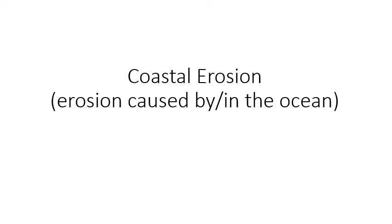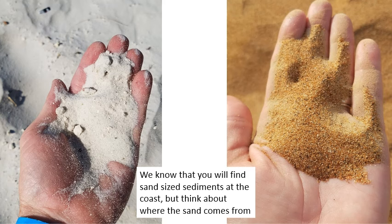Today's presentation is about coastal erosion — stuff that's getting moved around by the ocean or moving around in the ocean. When we think about the coast, we think about going to the beach, and we know a beach is a bunch of sand-sized sediments at that particular location. But let's back up and think about where those sediments came from and how they got there.